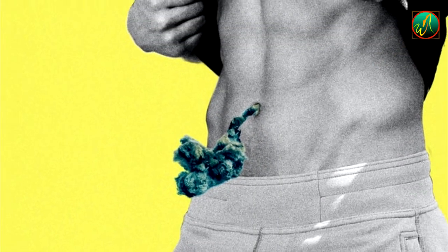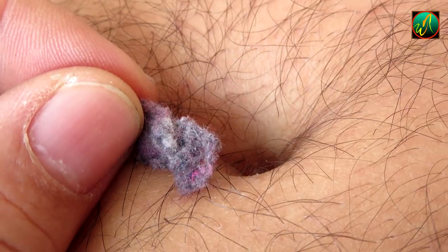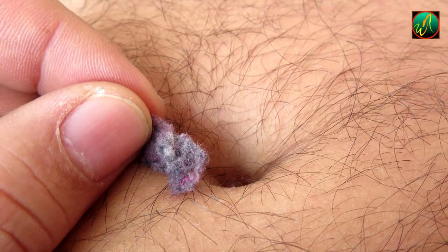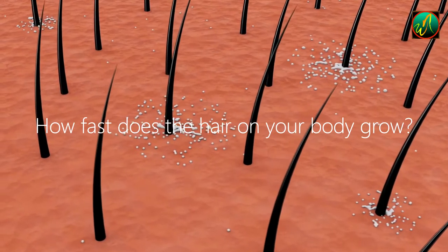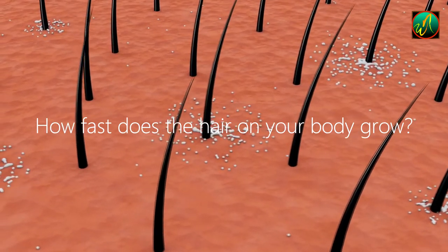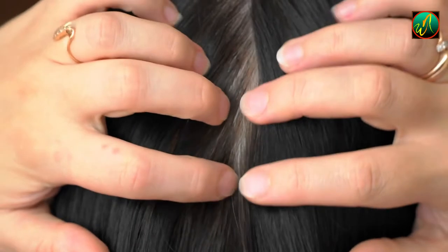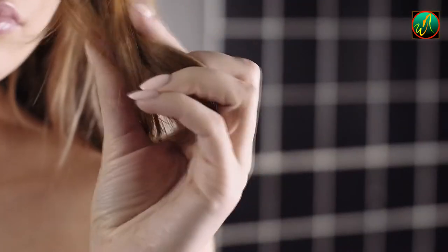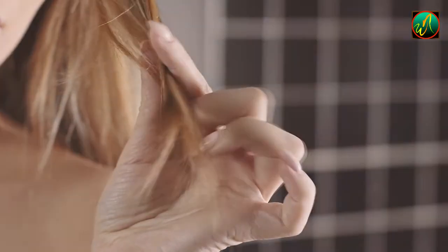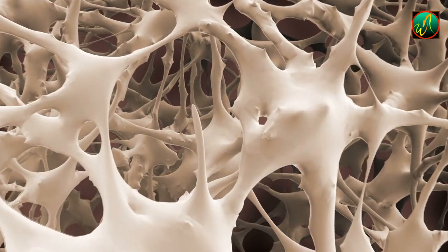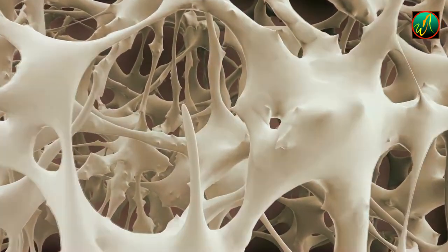How fast does the hair on your body grow? According to the American Academy of Dermatology, the average amount of hair that develops per month is half an inch. The hair on your head grows roughly six inches every year on average, which is a significant amount. Bone marrow is the only organ in the body that grows at a greater rate than other organs.